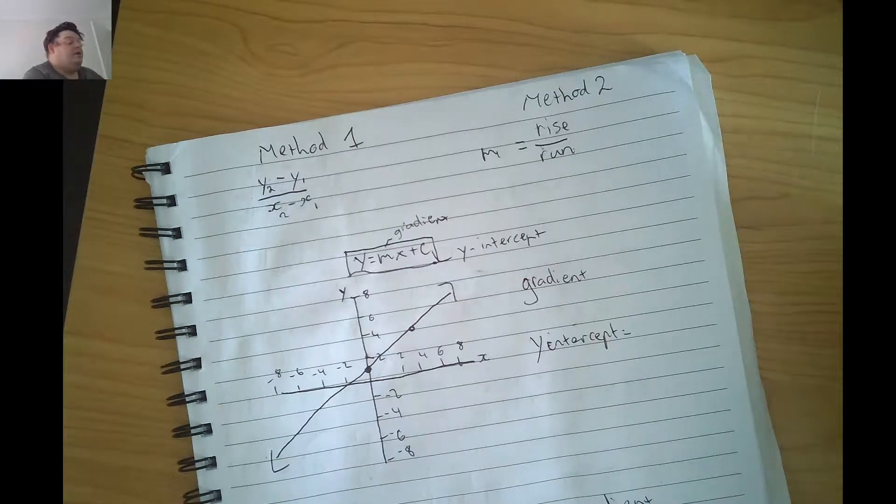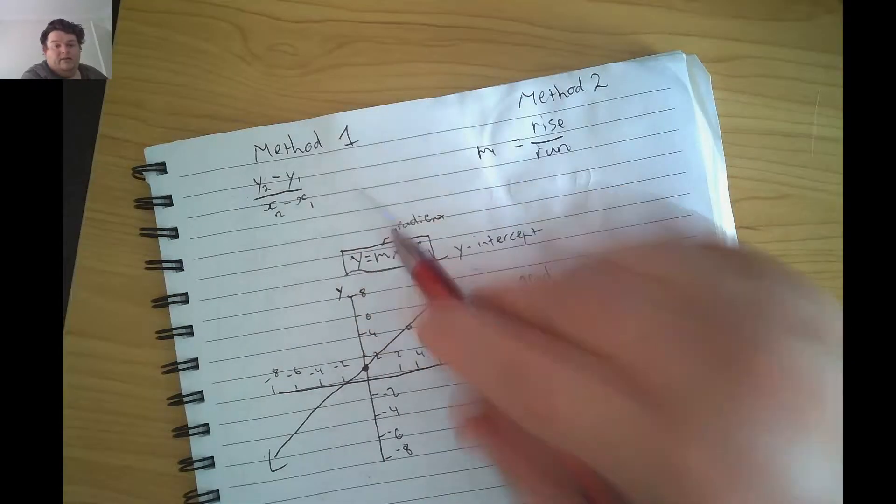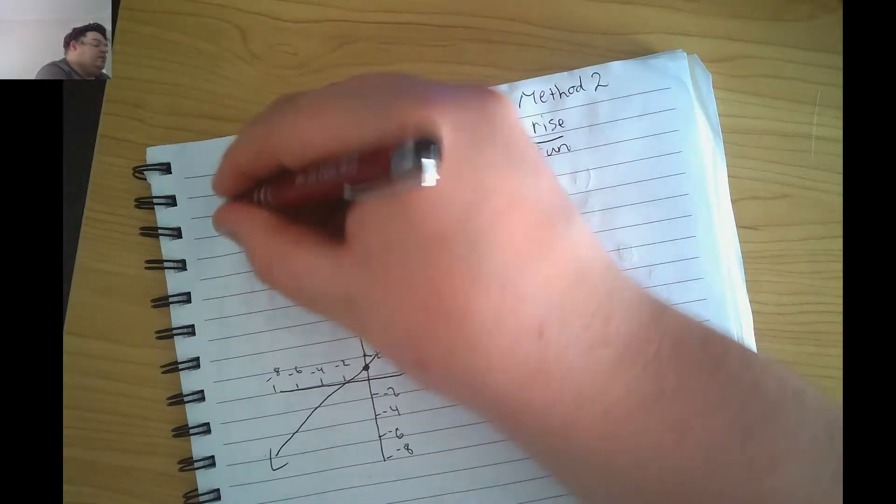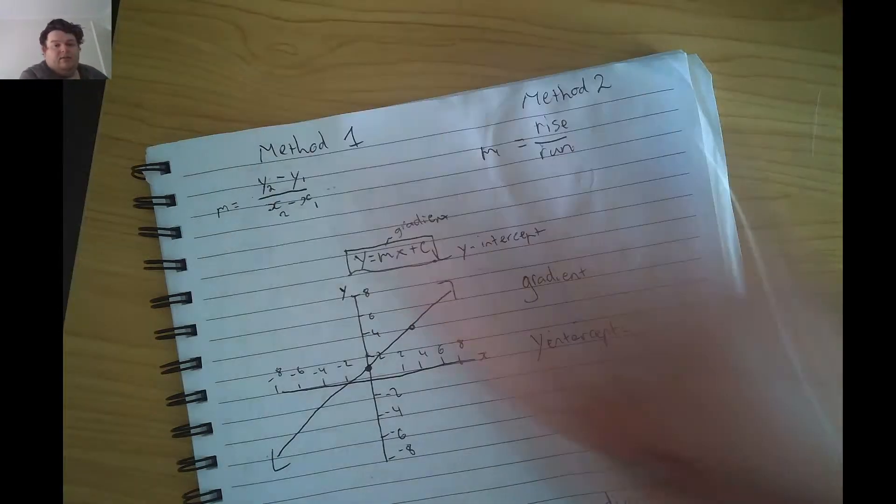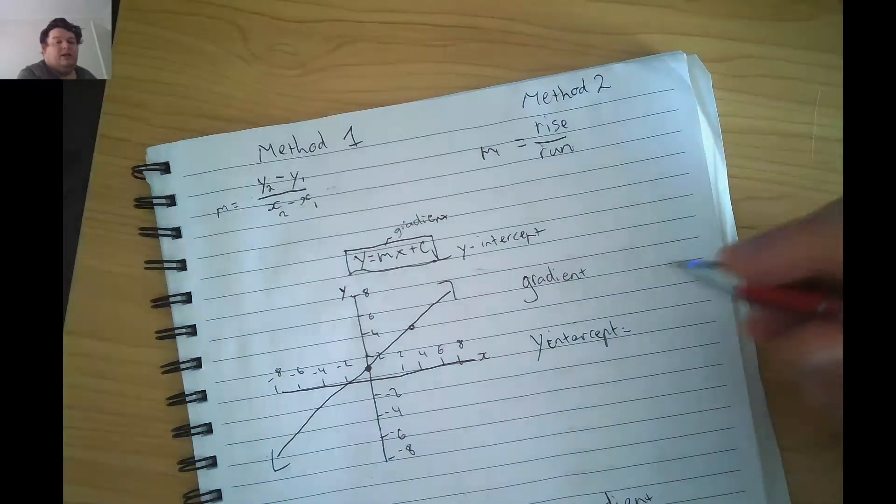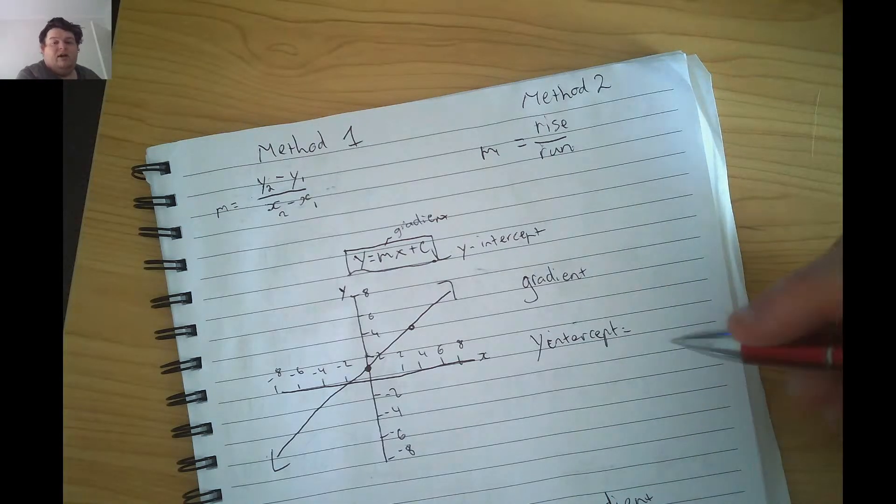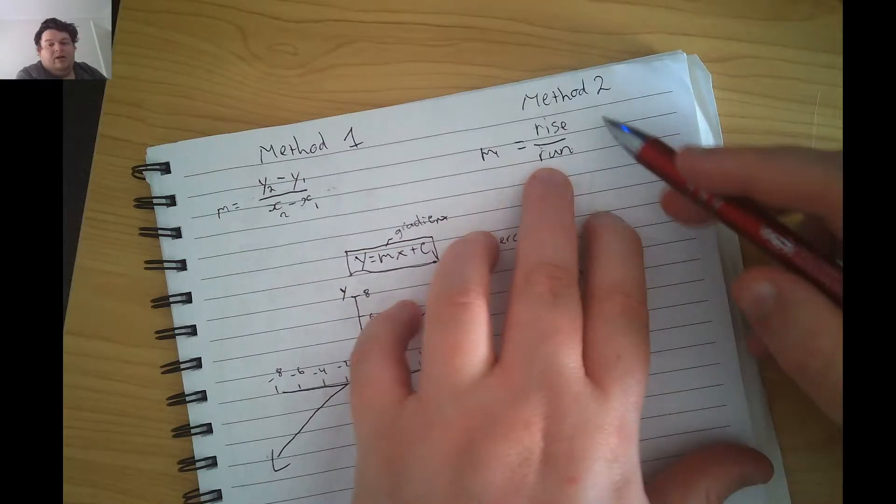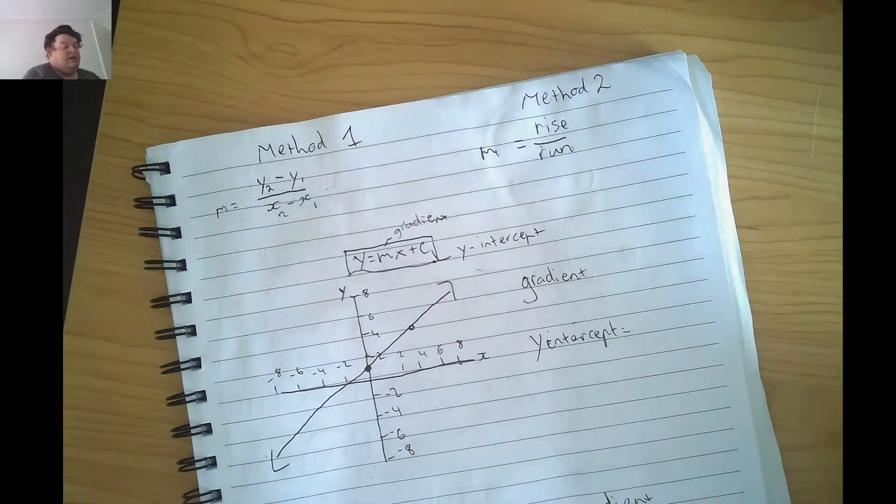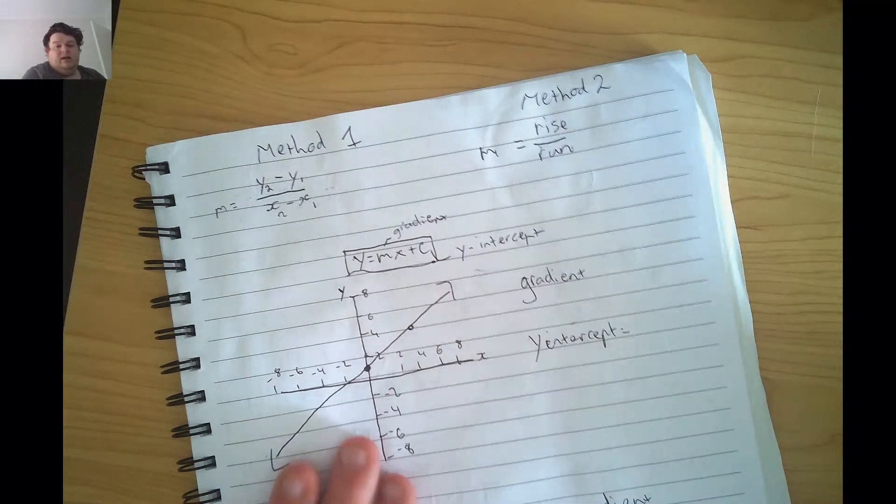So the first way to solve for gradient is this expression here: y2 minus y1 divided by x2 minus x1. You will need two points from your line to do that. The second one is called rise divided by run. I'll go through both of them and we'll find the y-intercept for this graph here.